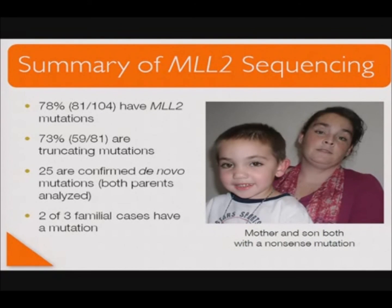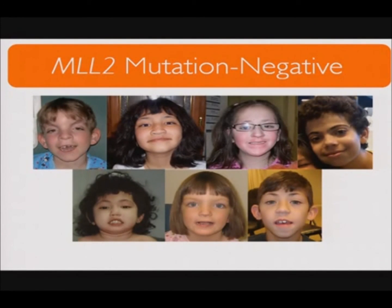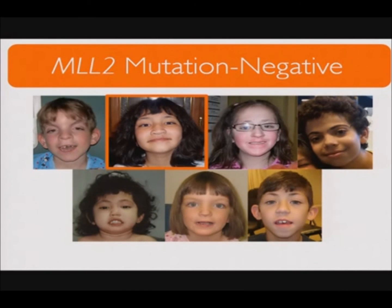Regarding individuals in our cohort who are MLL2 mutation negative: when we compare by the presence or absence of an MLL2 mutation, there are no striking differences except that renal anomaly appears more common in those with a mutation. Photographs of some of the 23 MLL2-negative individuals are shown here. Possible reasons no mutation was found include: an unidentified MLL2 mutation missed by our sequencing, a mutation in another gene if there is genetic heterogeneity, or misclassification with an alternative diagnosis.